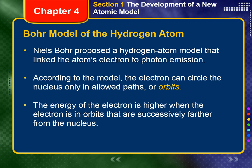The puzzle of the hydrogen atom spectrum was solved in 1913 by the Danish physicist Niels Bohr. He proposed a model of the hydrogen atom that linked the atom's electrons with photoemission.